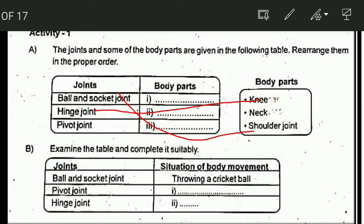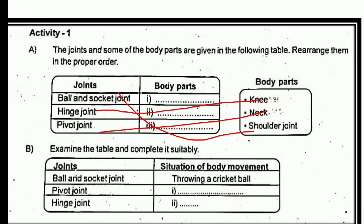The hinge can be moved only in the front. That is correct. Now let's look at the situation of body movement — ball and socket joint. We use a cricket ball to demonstrate the ball and socket joint.